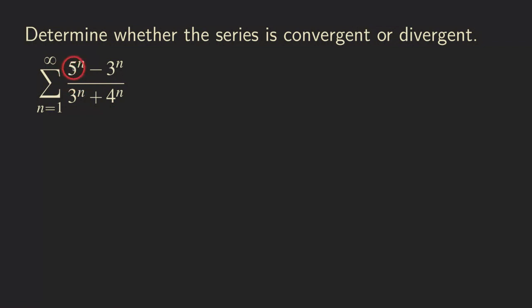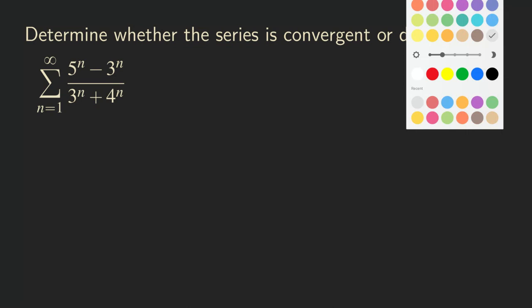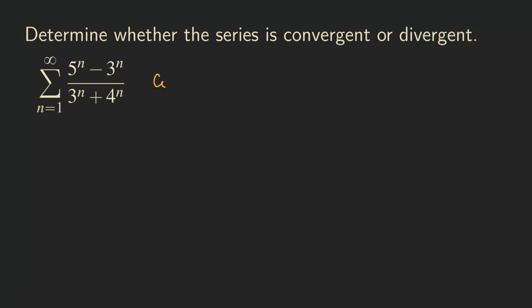As you can see here, we have the dominant term in the numerator, which is phi to the n, and then in the denominator the larger one is 4 to the n. So when we do that comparison, we are going to say that we compare the series with the one that has the quotient of the dominant terms of the numerator and denominator of the original problem.